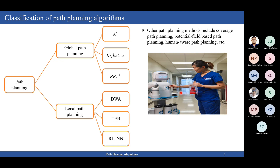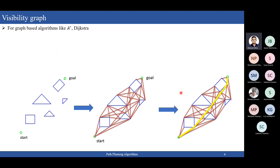Coming to the visibility graph. For graph search algorithms, we need to create visibility graphs. We assume the robot is a point object in a 2D planar space, and all obstacles are 2D polygons. Given the start, a goal point, and all the obstacles, we define a visibility graph. The nodes are the start point, goal point, and vertices of all obstacles. We connect all nodes which are visible — that is, a straight line between any two nodes that doesn't intersect any obstacle.